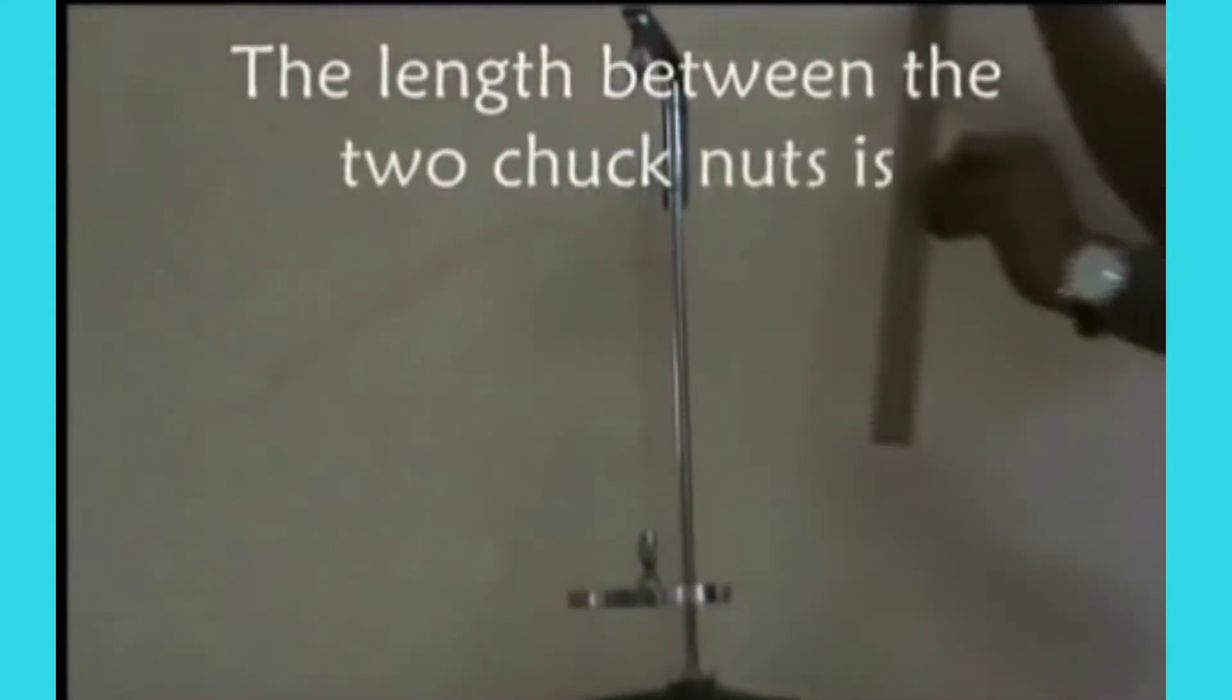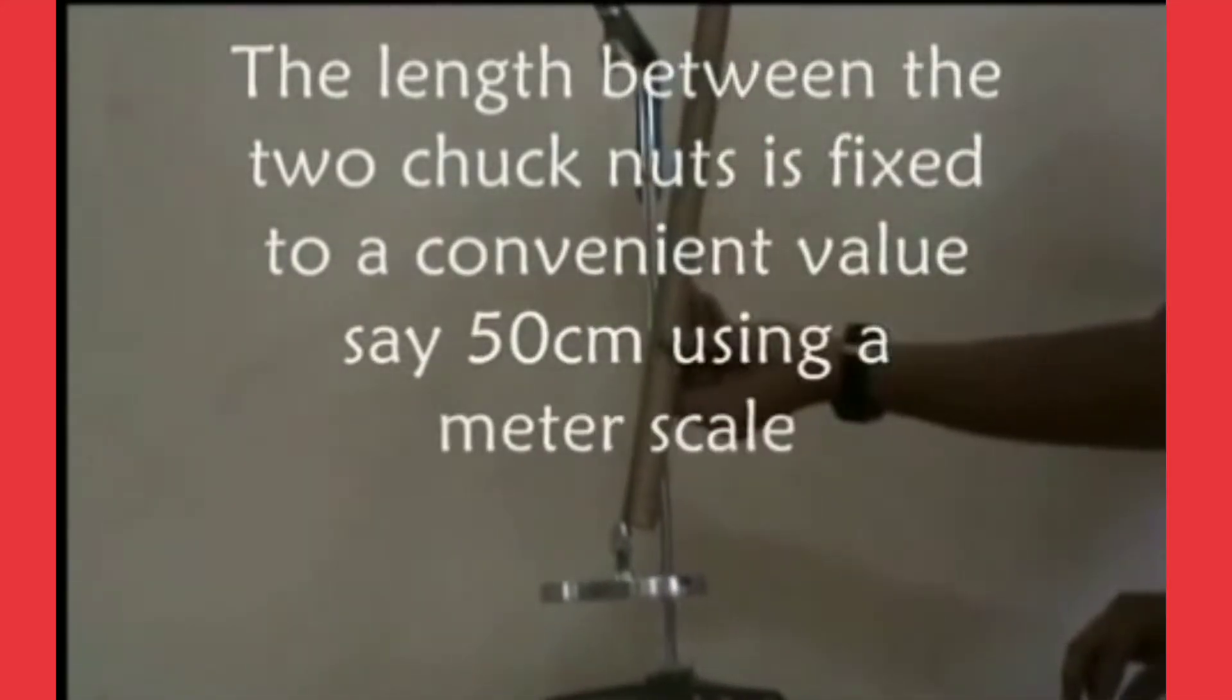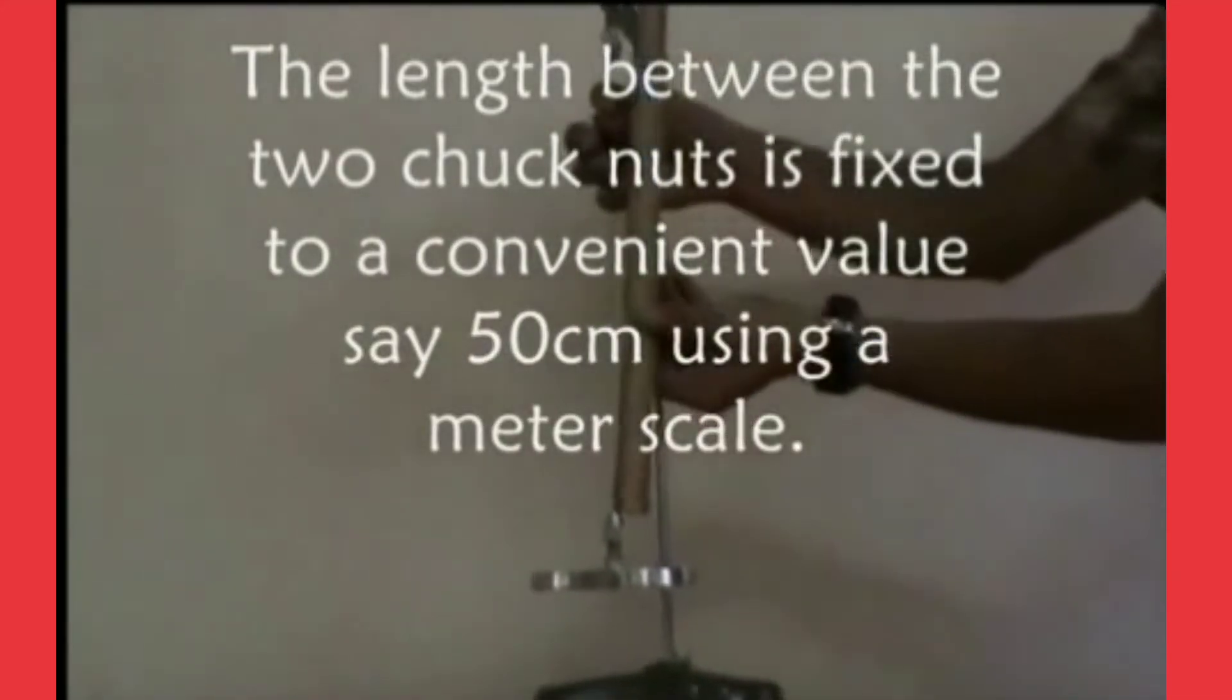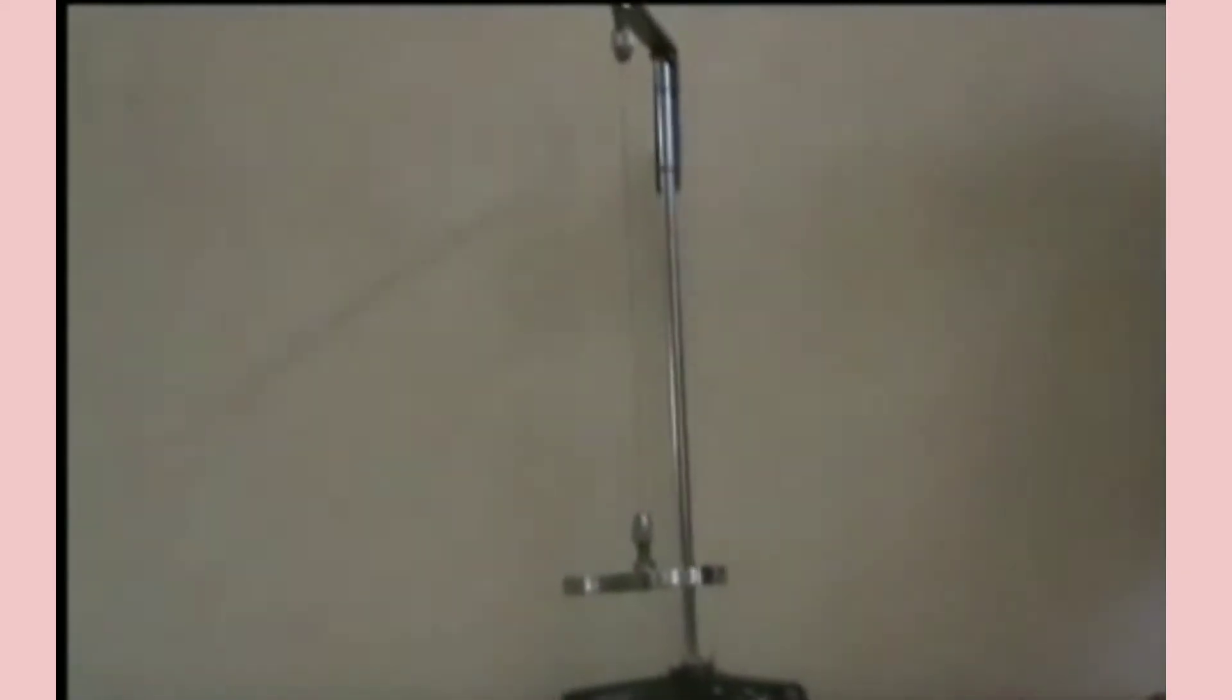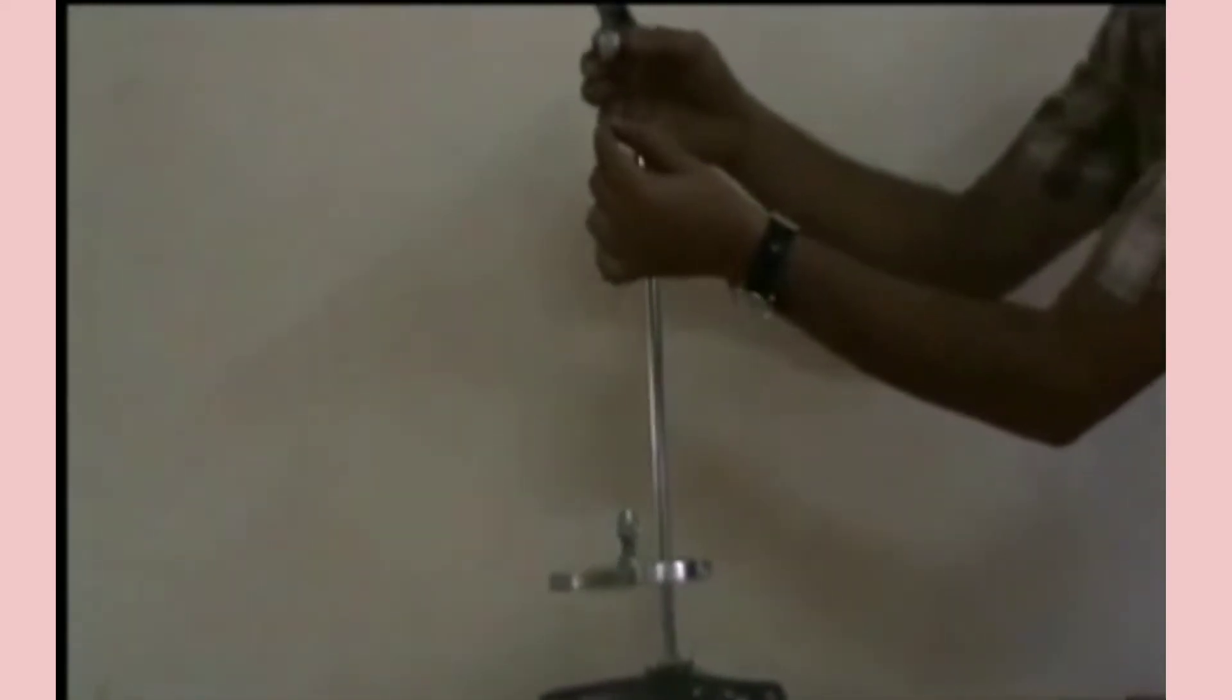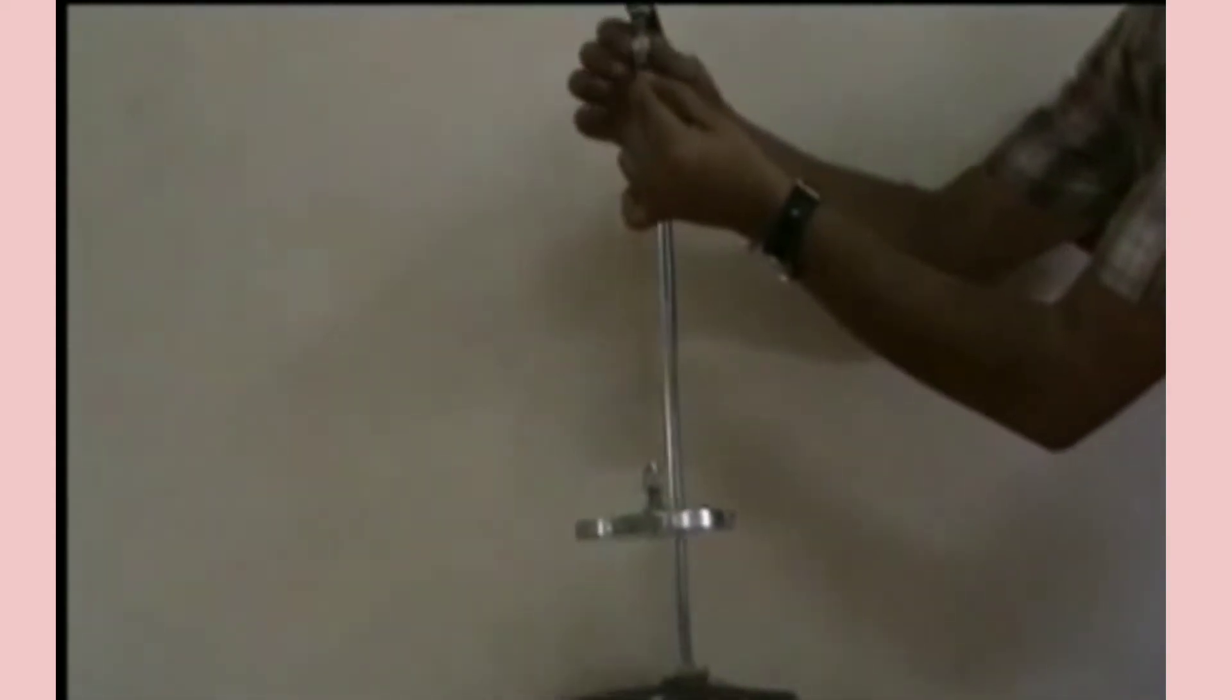First we need to adjust the length between the two check nuts to a fixed and convenient value, say 50 centimeters, using a meter scale. We need to do this experiment for different lengths like 50 centimeters, 60 centimeters, 70 centimeters, 80 centimeters. First we are doing it here for 50 centimeters.